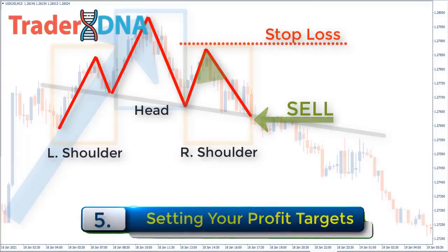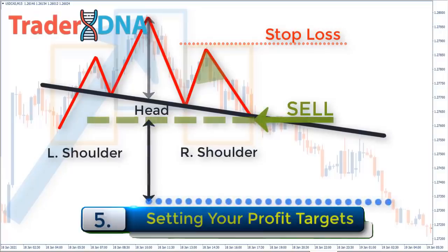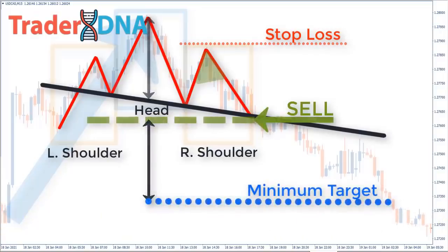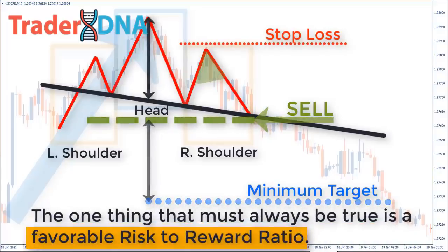Step five: setting your profit targets. The most common profit target is the distance between the head's peak and the neckline. If we use the conservative stop option, we will have the same distance as a loss limit, reducing our risk-to-reward ratio to one-to-one. To improve that ratio, most experienced traders place their protective stops above the right shoulder's peak while using the head-to-neckline profit target. The one thing that must always be true is a favorable risk-to-reward ratio, so always do the math before taking the trade.